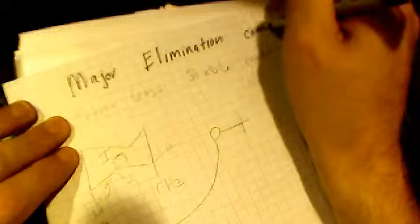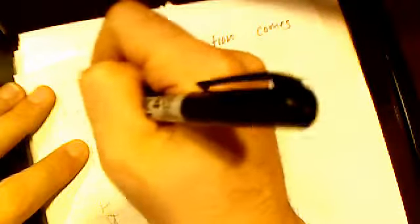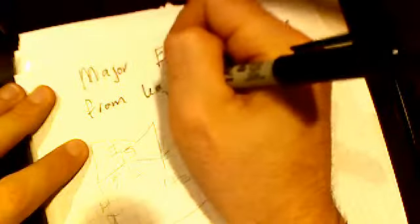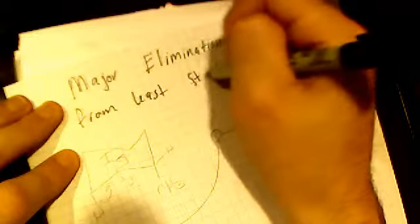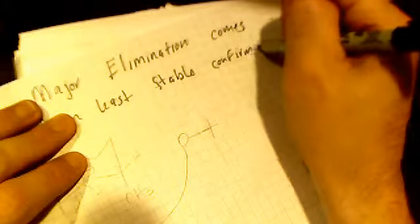So in order to get the major elimination product that would come from the least stable conformation, the bulky groups of methyl and iodine would be axial rather than equatorial.